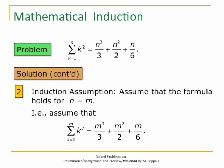In the second step we make the induction assumption. We assume that the formula holds if N equals M. So we assume that for the integer M, the sum of squares of integers up to M is M cubed over 3 plus M squared over 2 plus M over 6.